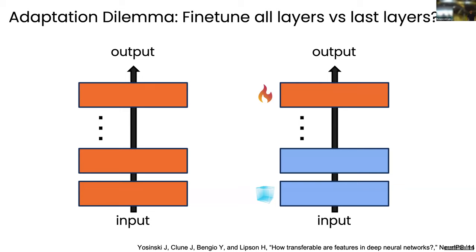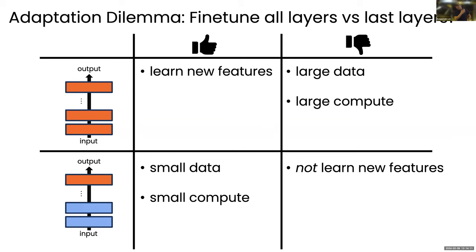Back in the days there was a dilemma. As a student trying to fine-tune these models, there were always two different choices. One: fine-tune all the layers. Two: freeze some of the underlying layers, assuming you already know the good features needed for solving the task, and only fine-tune the last layer or last few layers. There was never a good answer — it was always trial and error. You'd always report both numbers. But there are clear trade-offs between these two choices.